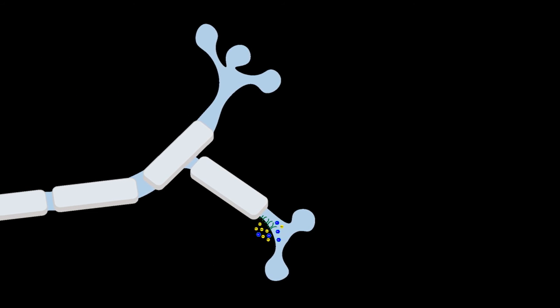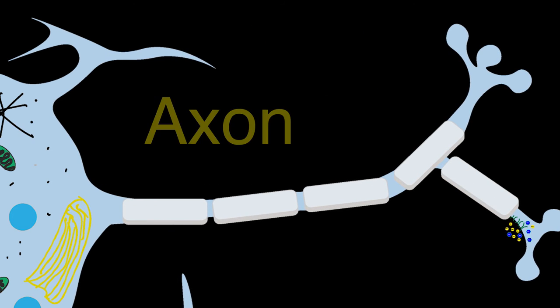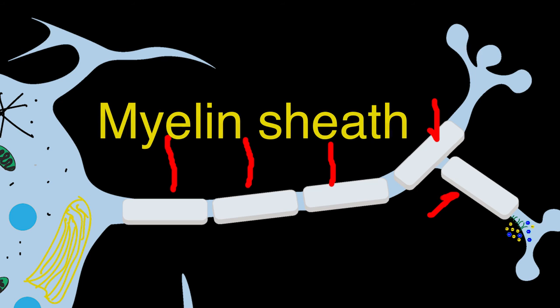Terminal buttons are connected to the soma by a shaft called the axon. The place where the axon connects to the soma is called the axon hillock. Axons can be several feet long, depending on the type of neuron. The axon is wrapped in a protective sheath that speeds up signal transmission while isolating the axon from neighboring neurons. This sheath is called the myelin sheath.